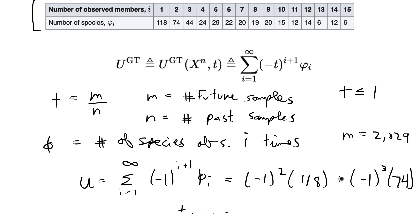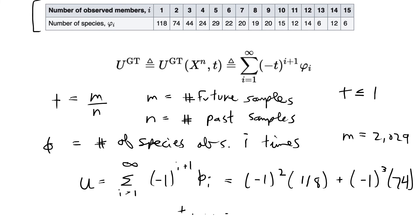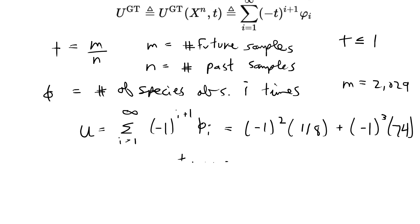As you can see, this is going to be basically a sum where you have negative 1 squared will give you 1, and then the second sum is negative, so it's going to be 118 minus 74 plus, minus, plus, minus. So this is just going to go back and forth. In other words, we can write u is equal to 118 minus 74 plus 44 minus 24 plus 29 and so on. I'm just going to go ahead and write out the equation that way.